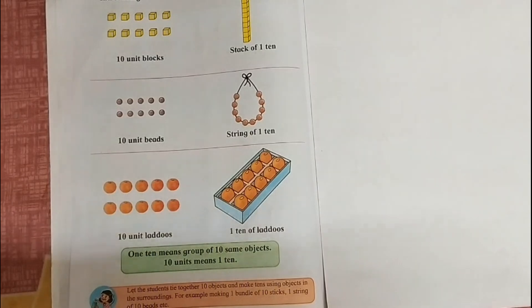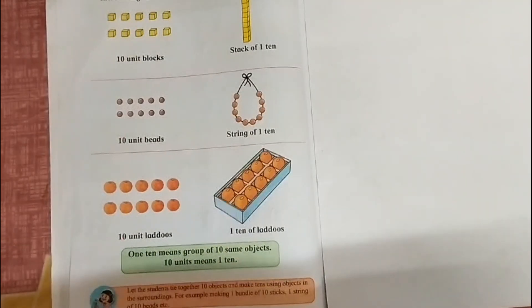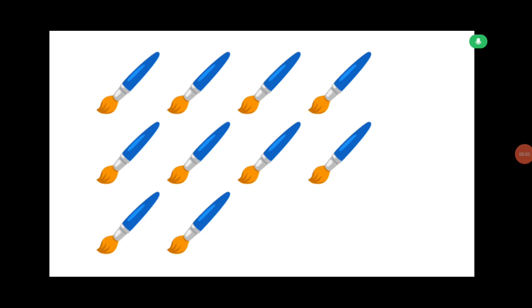Let's see a few more examples. We can take any things. The similar things which are in a group of ten are one ten. Here on the screen, paint brushes are there. How many are there? Ten. So it will be one ten.